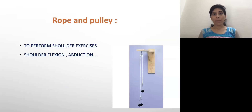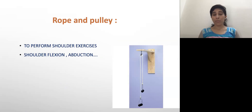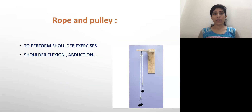Rope and pulley. This also helps to improve the range of the shoulder joint in different ranges of motion, that is shoulder flexion, shoulder abduction, and it provides active assisted type of exercises. The patient has to sit on a chair and perform this exercise.